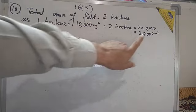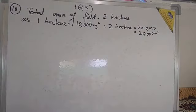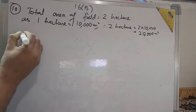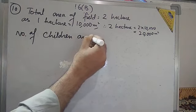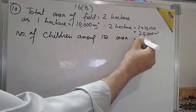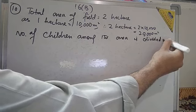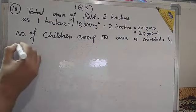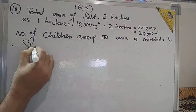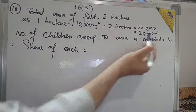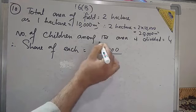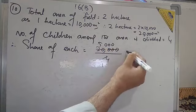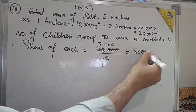He wants to distribute this area of the field among his four children equally. The number of children among whom the area is divided is 4. The share of each child is equal to 5,000 square meters.